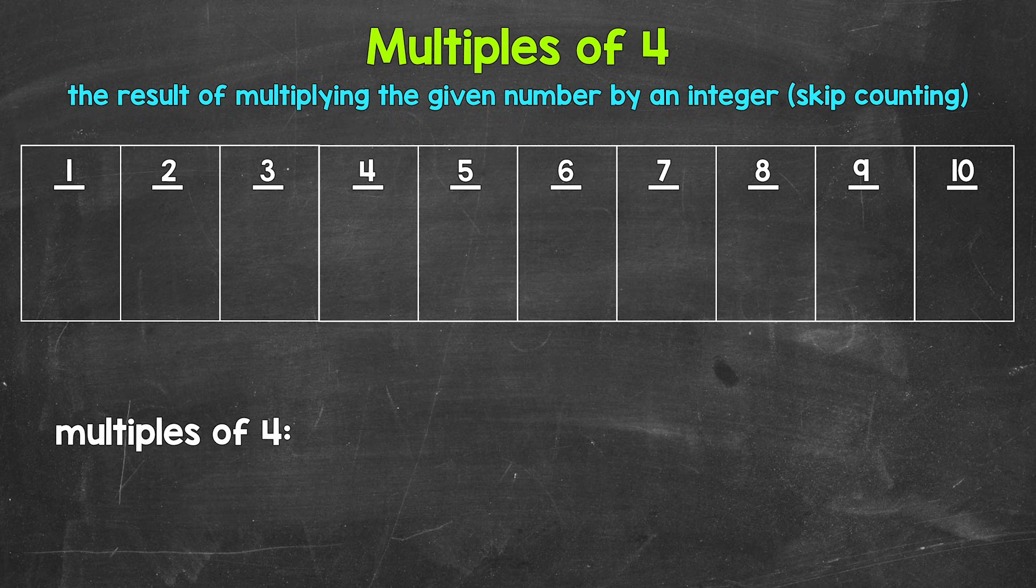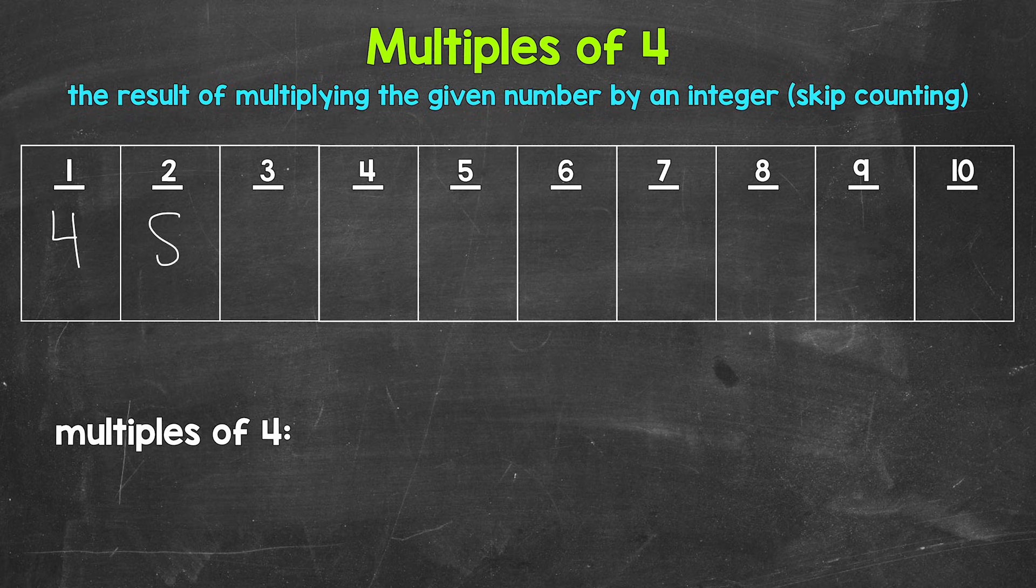So taking a look at the multiples of four, let's start with one times four. That gives us four. Four is the first multiple of four. Then we have two times four. That gives us eight.